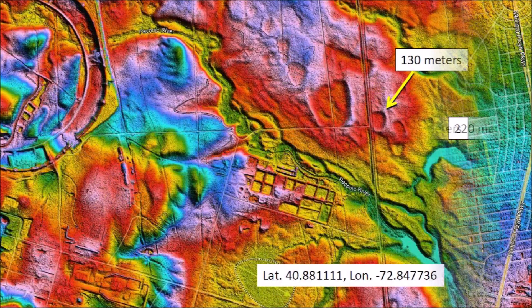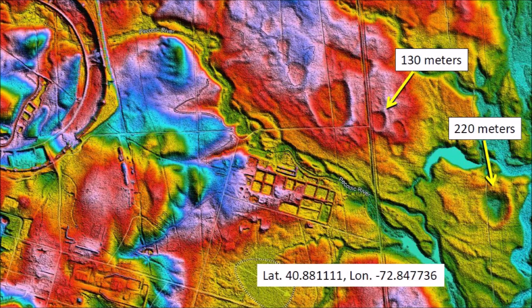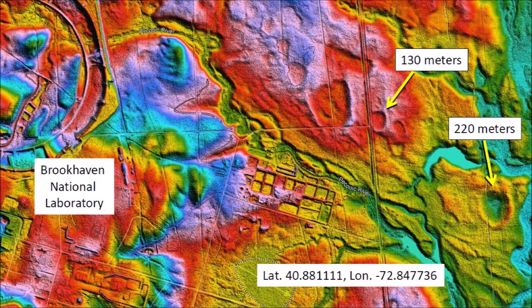A football field could easily fit within a Carolina Bay with a length of 130 meters. This image shows a circular structure on the grounds of the Brookhaven National Laboratory — a particle accelerator that propels elementary particles such as electrons or protons to very high energies around the circular track for colliding beam and fixed target experiments.